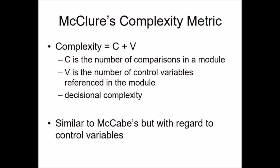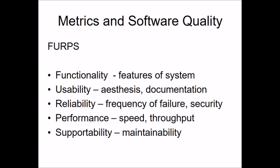McLaor's complexity matrix is also defined as C + V, where C is the number of comparisons in a module and V is the number of control variables referenced in the module. This is the decisional complexity, similar to McCabe's but with regard to control variables. The number of comparisons plus control variables gives McLaor's complexity metric.